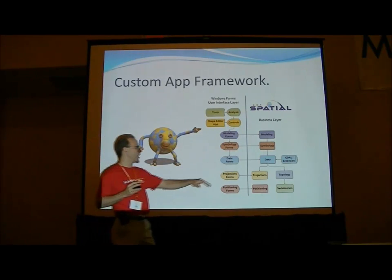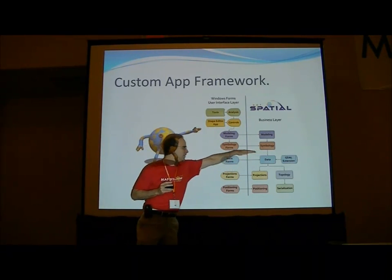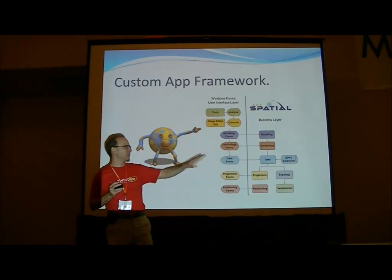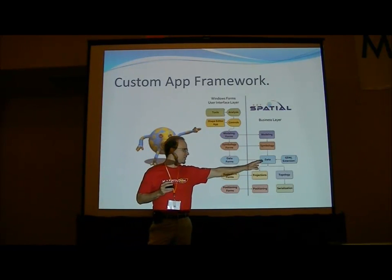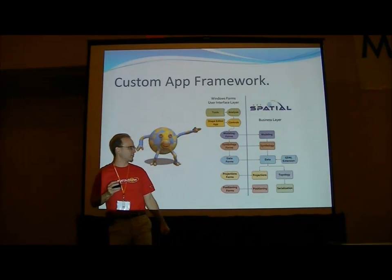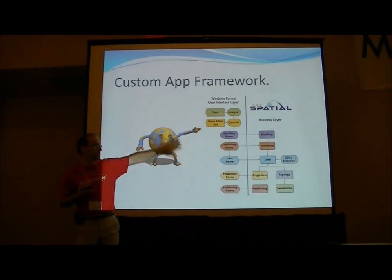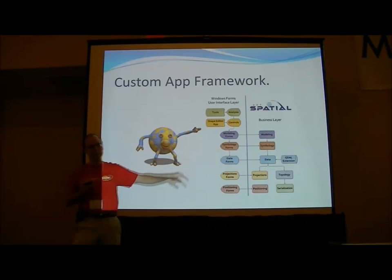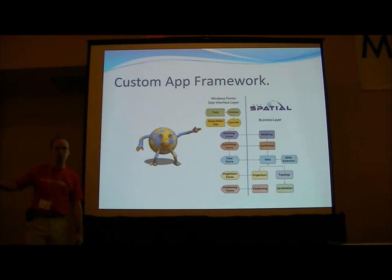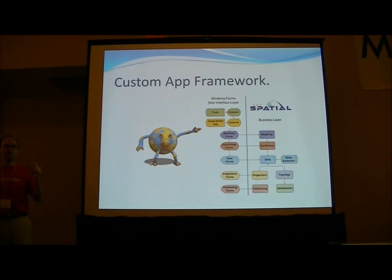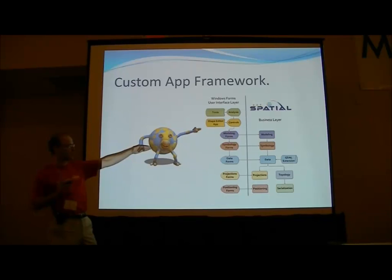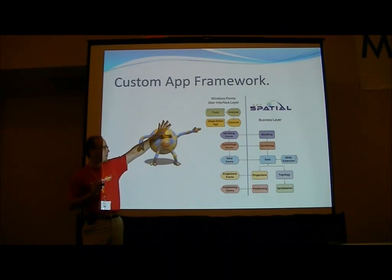Other people might want to stop at the data access layer and say they want to access data, do topology and projections, but don't want to symbolize it or do raster representations — they just want to open a grid, run through a loop, do some calculations on their raster, and close it without visualizing anything. Those people can start with some parts of the framework and not use the other parts.